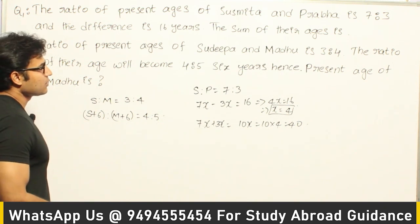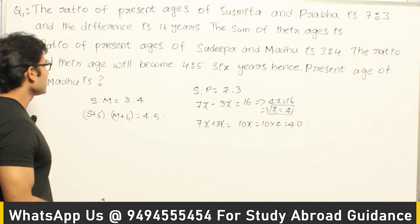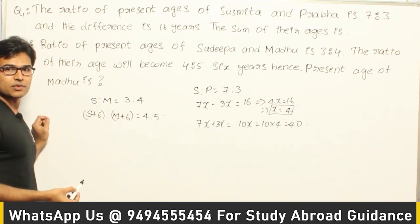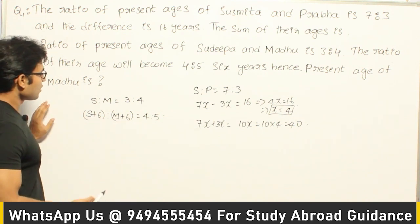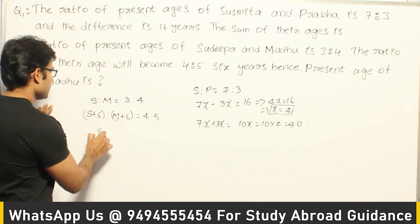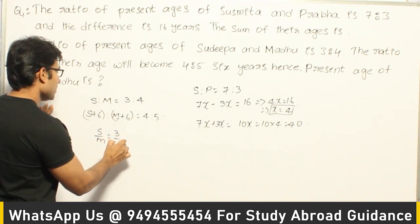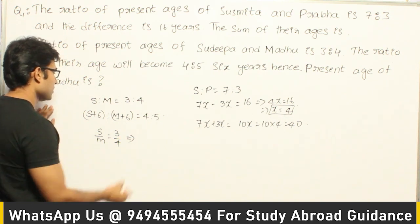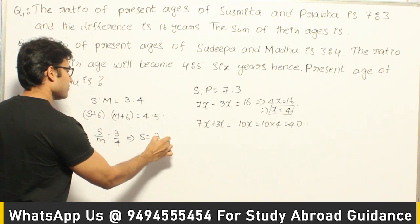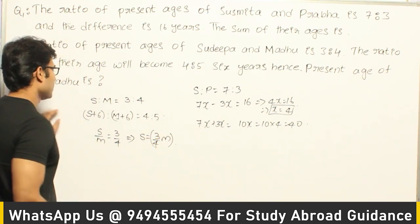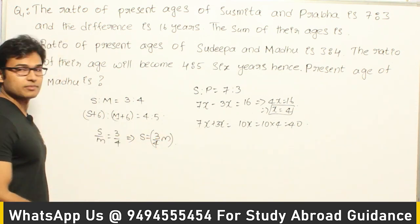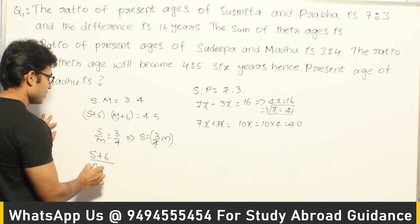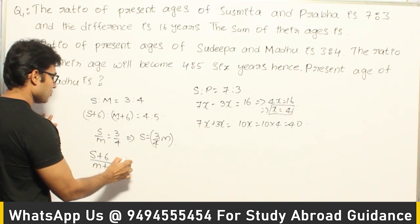These two are given. Now from this you are supposed to find out what is the present age of Madhu — the value of M. So how to solve it: S by M is given as 3 by 4, so you can write S equal to 3 by 4 M. And you can substitute it in one of them. In the other equation it is given as S plus 6 by M plus 6 equal to 4 by 5.